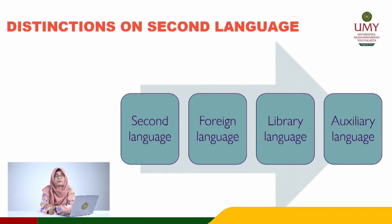The first is about the second language. A second language is a typically unofficial or socially dominant language needed for education, employment, and other basic purposes. It is often acquired by minority group members or immigrants who speak another language natively. In this more restricted sense, the term is contrasted with the other terms in this list.